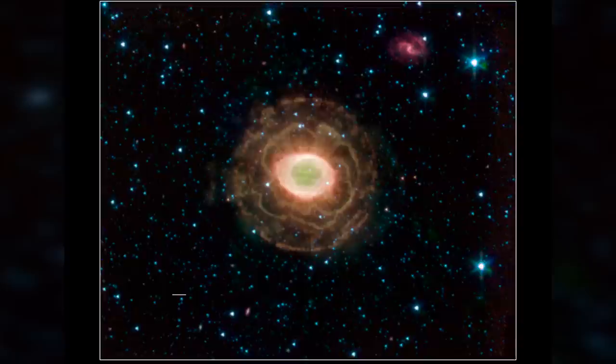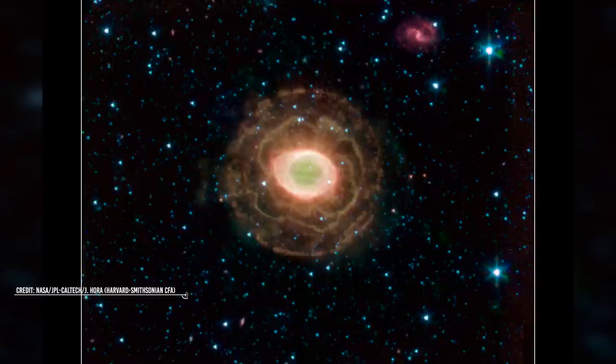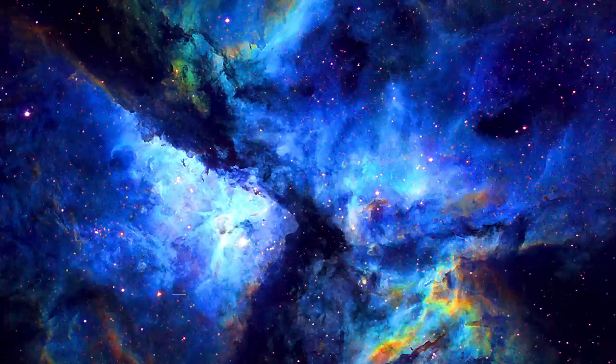In fact, this object, just one arc first in angular diameter and one light year in true diameter, is also visible in the southern skies, 2,000 light years away in the Vila constellation.